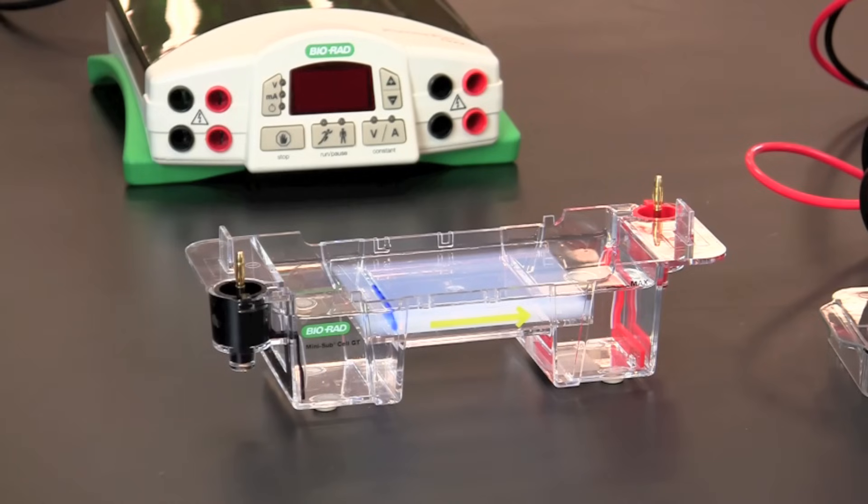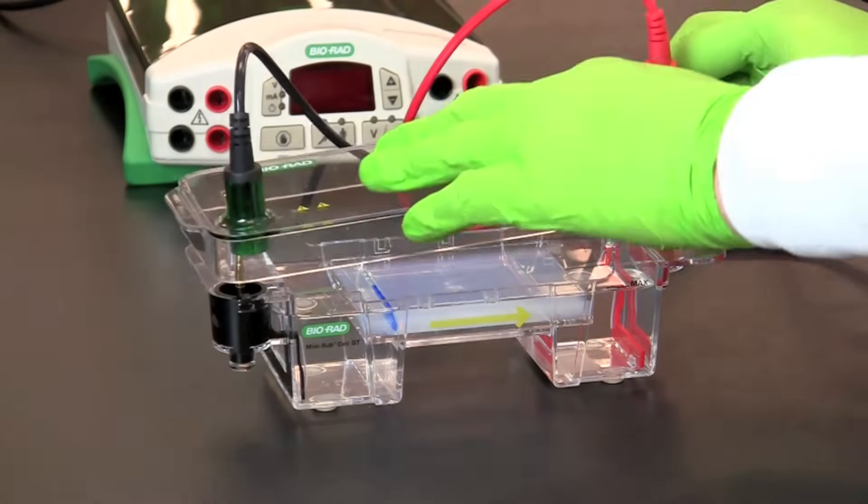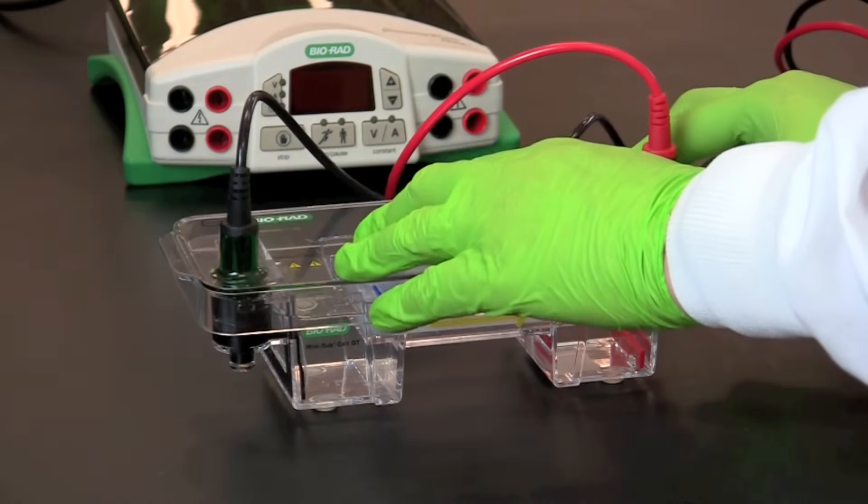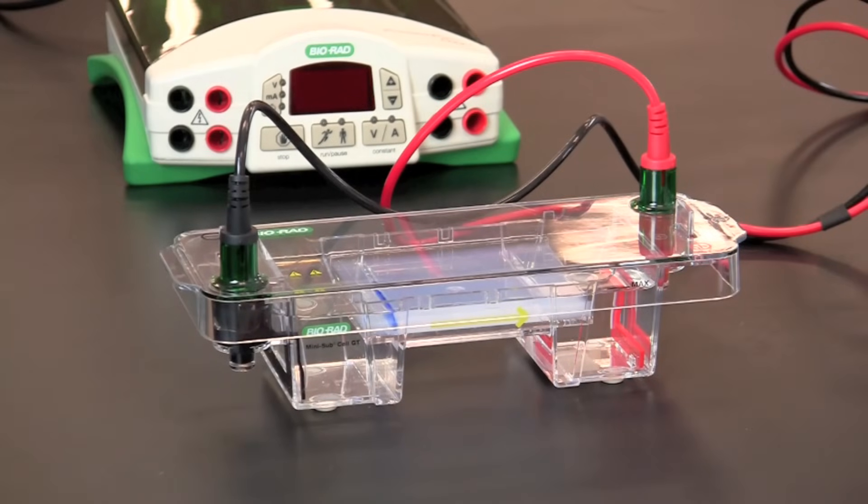Once all the samples have been loaded, avoid any bumping or movement of the gel chamber. This might result in the sample spilling into adjacent wells. Place the lid on the gel chamber with the terminals correctly positioned to the matching electrodes on the gel chamber, black to black and red to red.